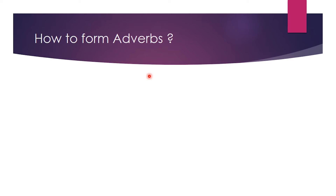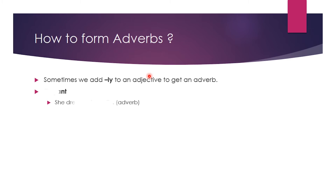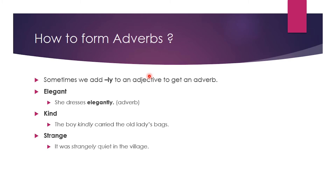Let me tell you how to form adverbs from adjectives. Generally, in most cases, we add -ly to the end of an adjective. For example, elegant is an adjective; add -ly and it becomes elegantly: She dresses elegantly. Also, kind becomes kindly: The boy kindly carried the old lady's bag. Strange becomes strangely: It was strangely quiet in the village.